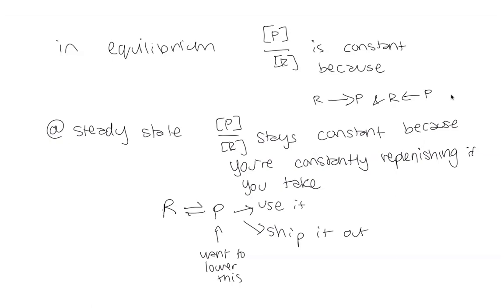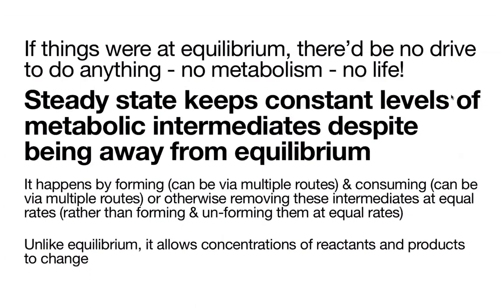That's going to bring down the product concentration. You're going to be driven to the right — good old Le Chatelier's. By doing this, you're able to keep the drive going. But eventually you're going to run out of your reactants, so you need to keep replenishing. So basically, steady state is able to keep a constant level of a metabolic intermediate despite being away from equilibrium.